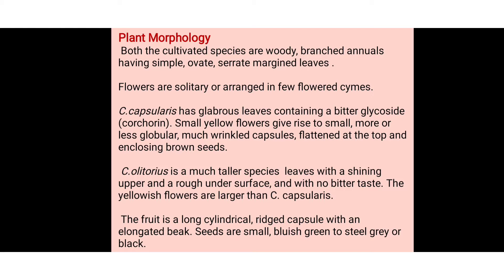Corchorus capsularis has glabrous leaves containing a bitter glycoside called corcorine. Its small yellow flowers give rise to small, more or less globular, wrinkled capsules flattened at the top and enclosing brown seeds.